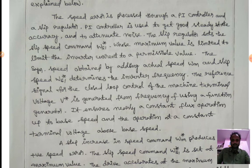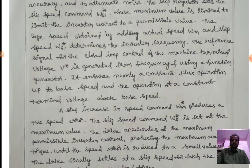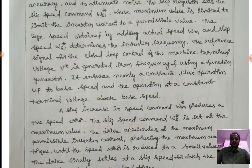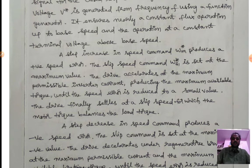The actual speed WM added to slip speed WS1 determines the inverter frequency. The reference signal for the closed loop control of the machine terminal voltage V_reference is generated from the frequency f using a function generator. This ensures nearly constant flux operation up to base speed, and constant terminal voltage operation above base speed.